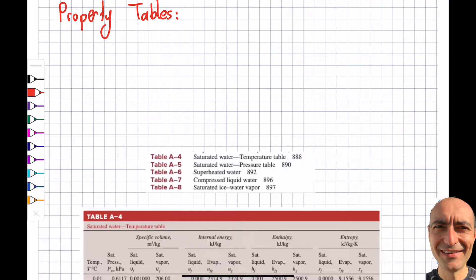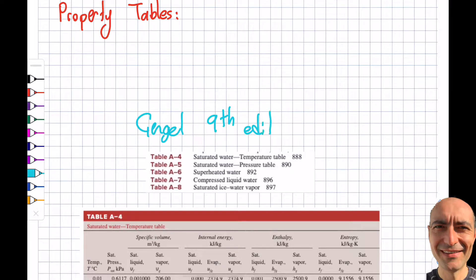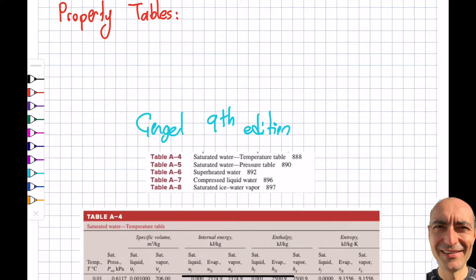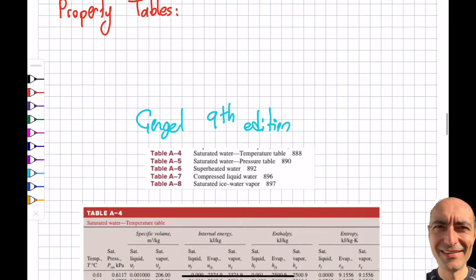We will have to read information from property tables. This is Cengel 9th edition, the required textbook. Tables A4 through A8 are all for water — saturated water tables — and we will be referring to these tables very often.